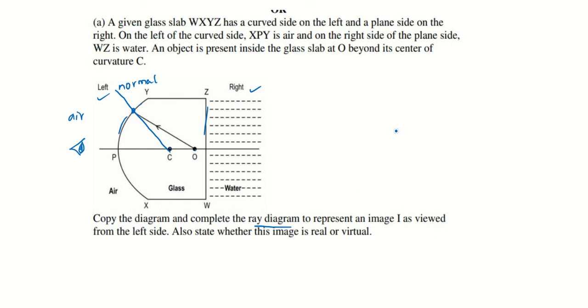Now we know that when light goes from a denser medium to a rarer medium, it will bend away from the normal. So instead of going straight like this, it goes slightly like this, bending away from the normal.